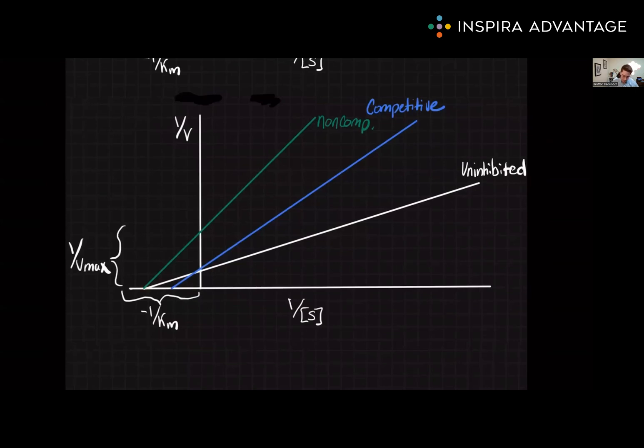Because Vmax decreases, we'll see the y-intercept increase. Remember that the y-axis is 1 over velocity. So as velocity decreases, the overall value will increase.